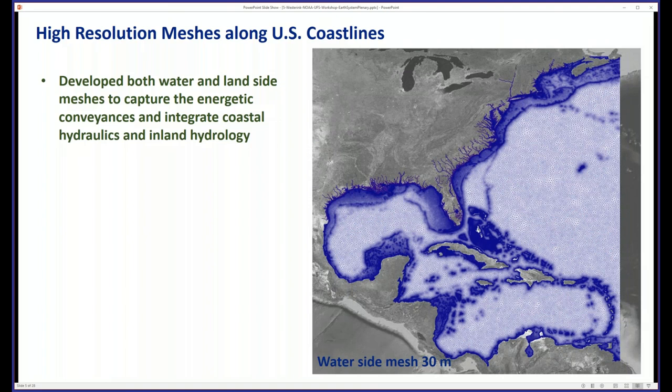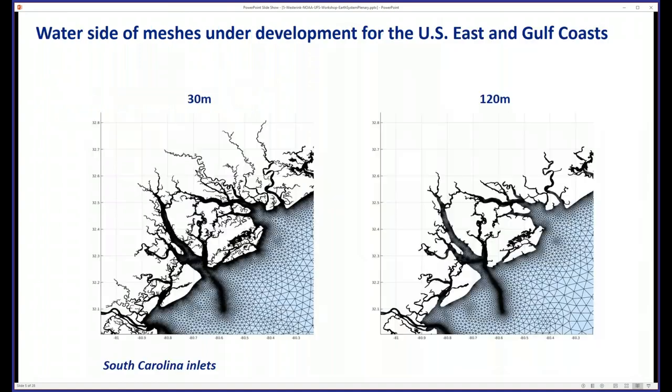A typical example is the east coast U.S. Gulf Coast component. You can see this is the ocean side or water side only — that whole network of channels extending into land so we can hook in the whole coastal floodplain with the National Water Model for the hydrology.